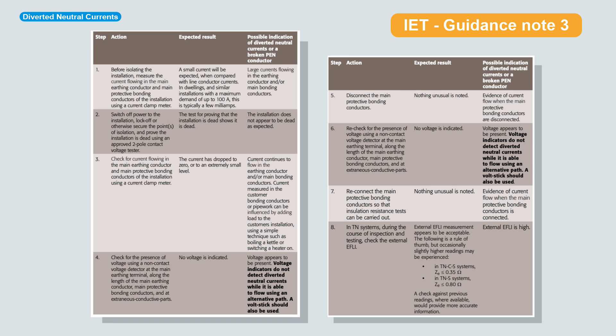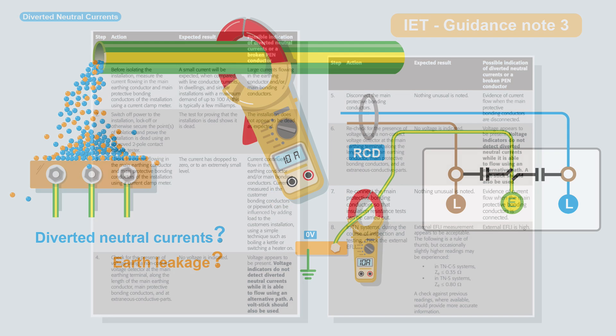The expected result is a small current will be expected when compared with line conductor currents in dwellings in separate installations. This is generally a couple of milliamps. A possible indication that you do have a broken PEN conductor, a diverted neutral, is that you've got large currents flowing in the earthing conductor or main bonding conductors. It doesn't tell you what to do though, if you do find that. It just tells you what the indication might be. If you suspect something's still alive, what you do is you stop working for an investigation, find out what's going on. Don't start disconnecting the main earthing terminal. Don't start disconnecting bonding conductors. There could be a dangerous voltage on them. Anything that's not right, anything that doesn't seem right, you're getting a voltage where you shouldn't, stop working, check it out.